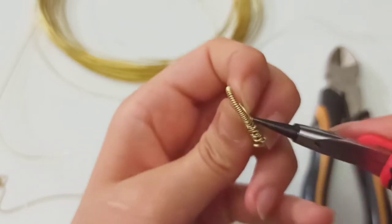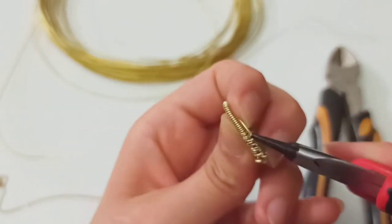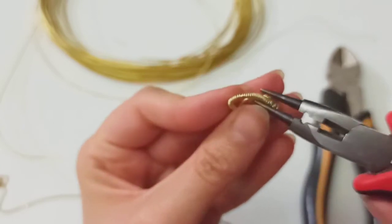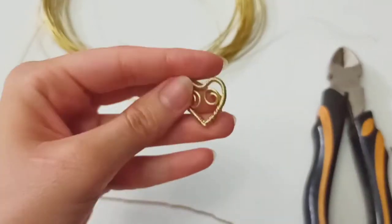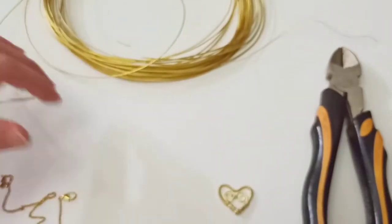And close the wire so that there wouldn't be any open edge or part. Okay, now we could make a jump ring.